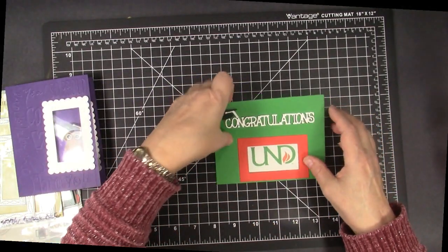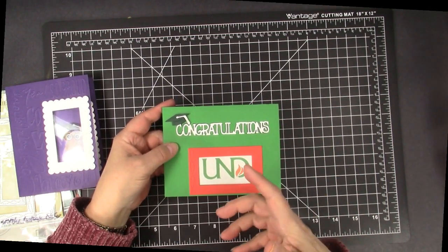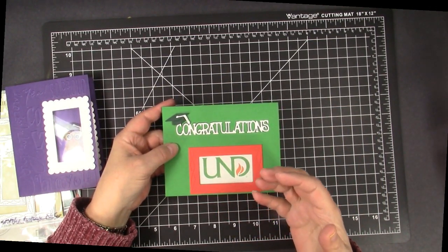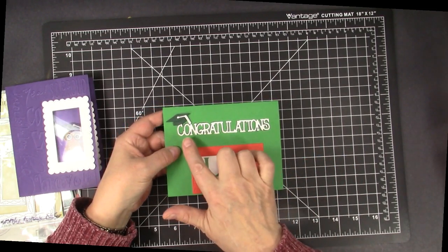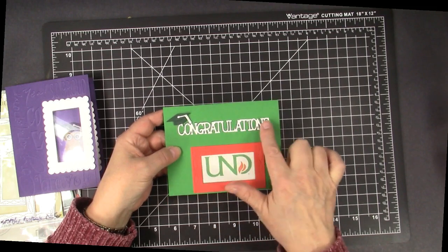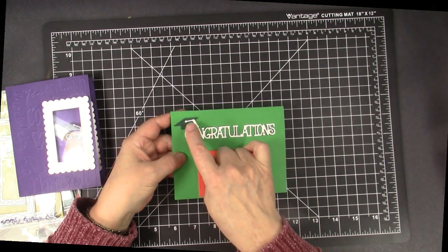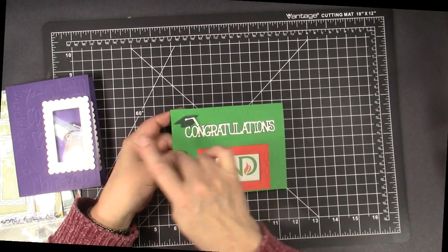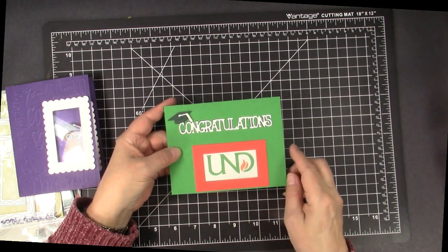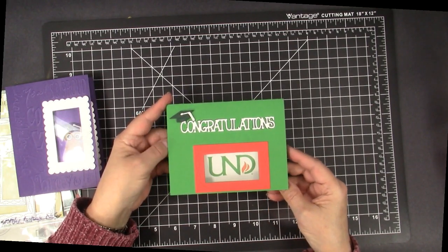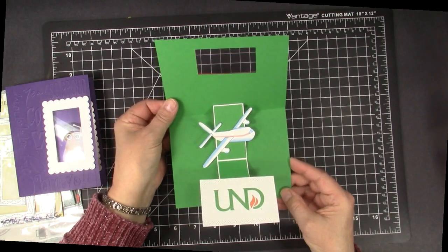You can also turn the card so it pops out a different way. So in this case, I needed a masculine card for my nephew's graduation as a pilot. This Congratulations that I layered is a Tonic Studios die, and that Graduate hat is the same as it's on the Owl there, and that's that Gina Marie Wonky Rectangles Stitched Rectangles, and then when you open it, it opens like this.